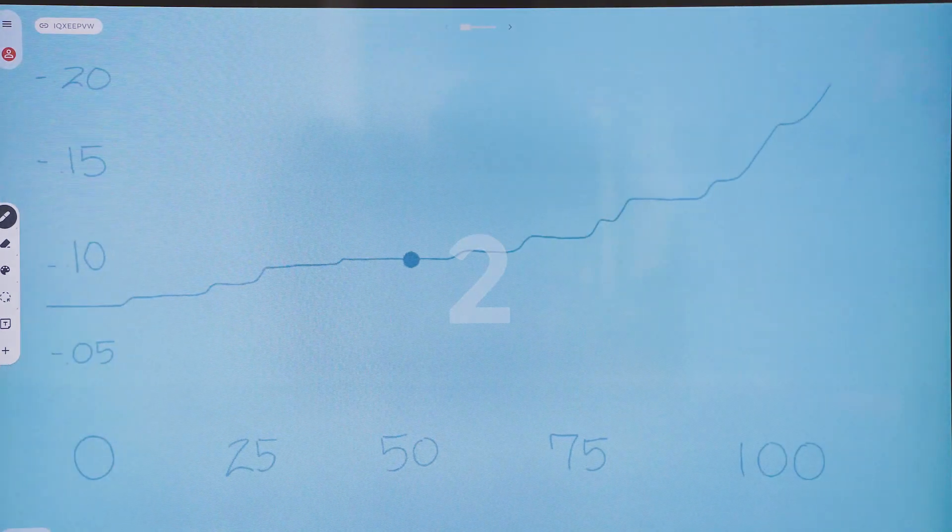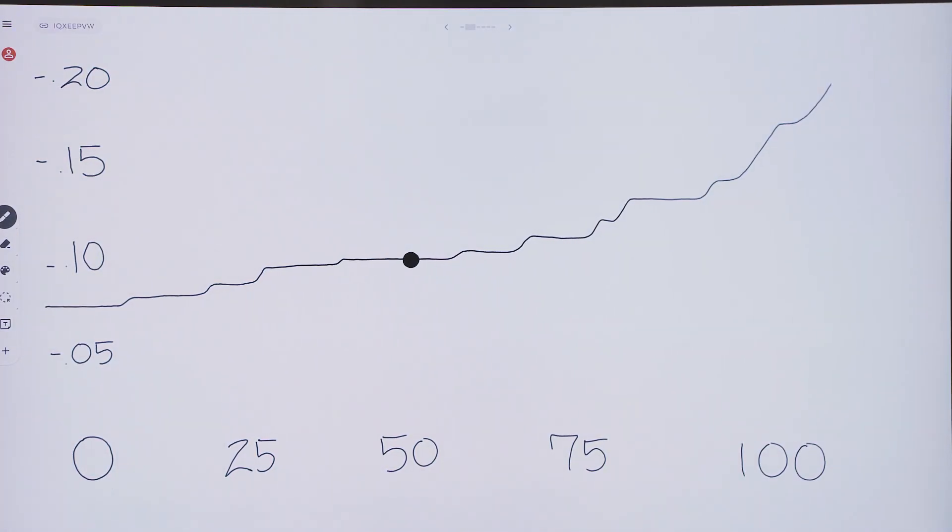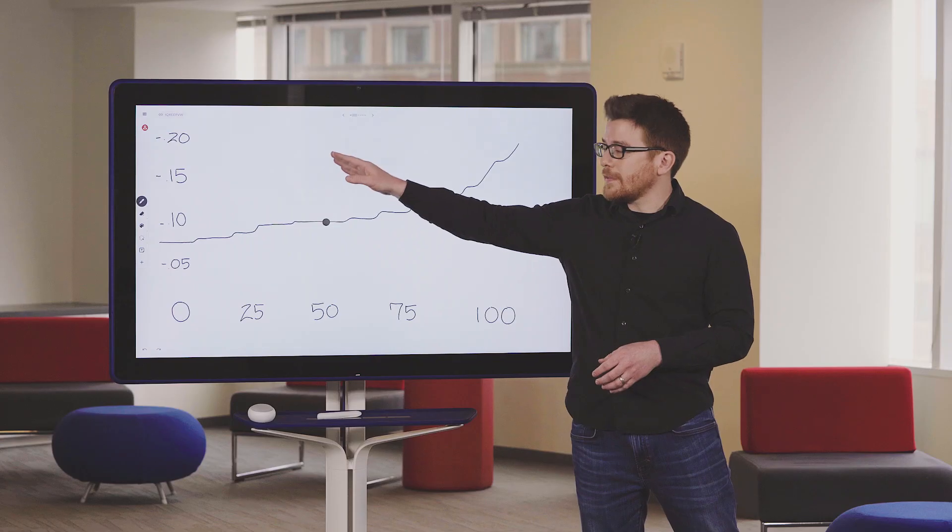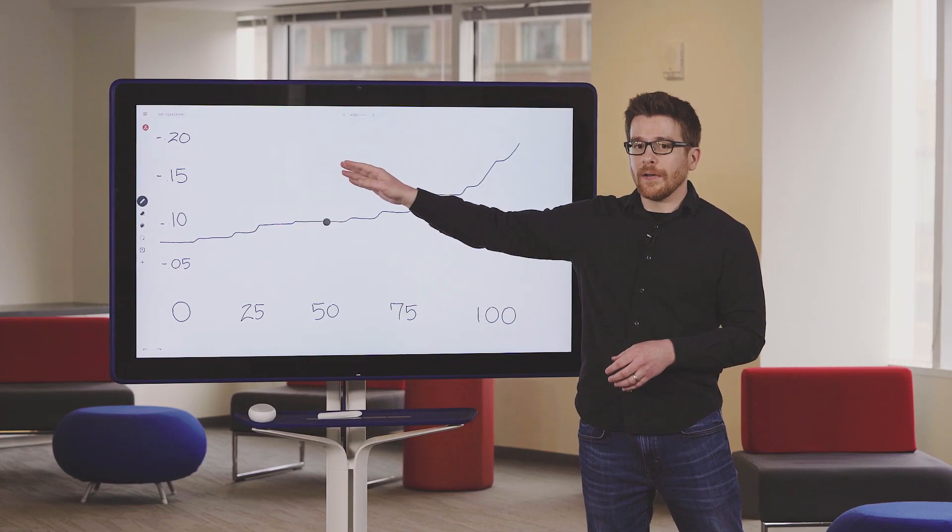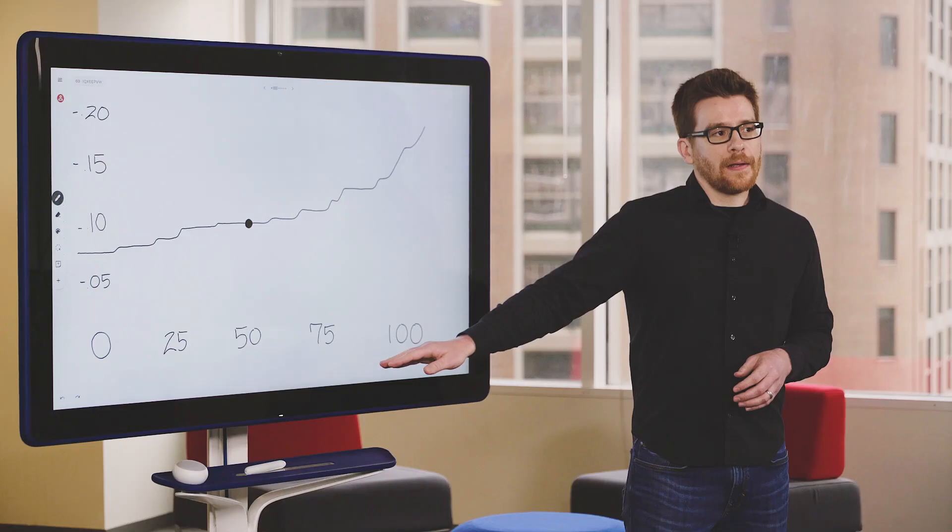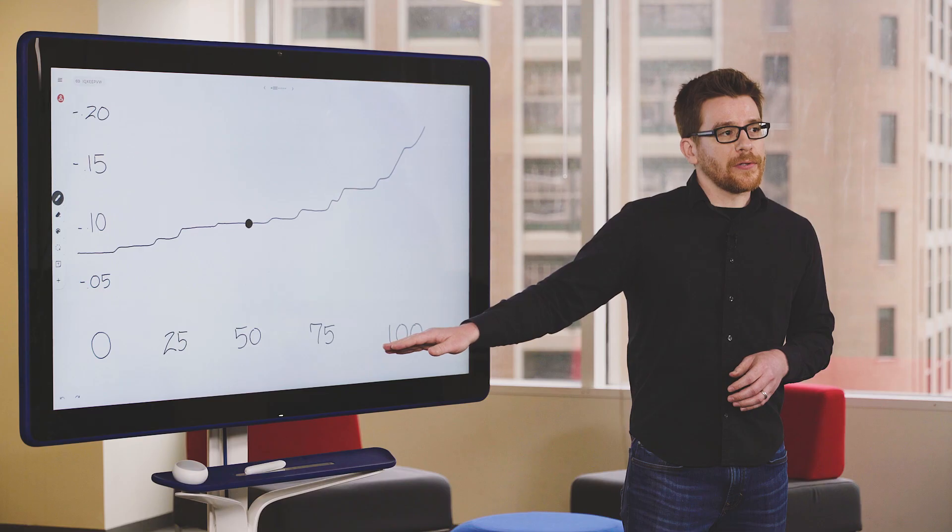So this chart here on the y-axis shows us the risk of a loan. At the bottom we have about a 5% chance of default and at the top about a 20% chance of default. The x-axis here is telling us how much of the credit someone has available that they're using.